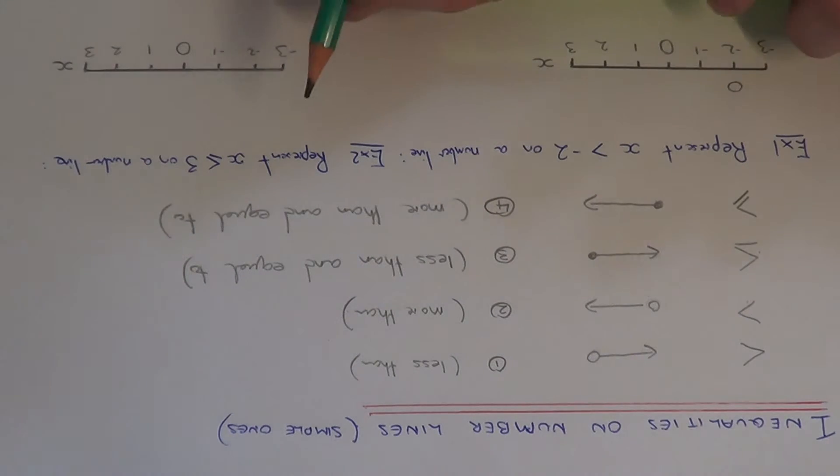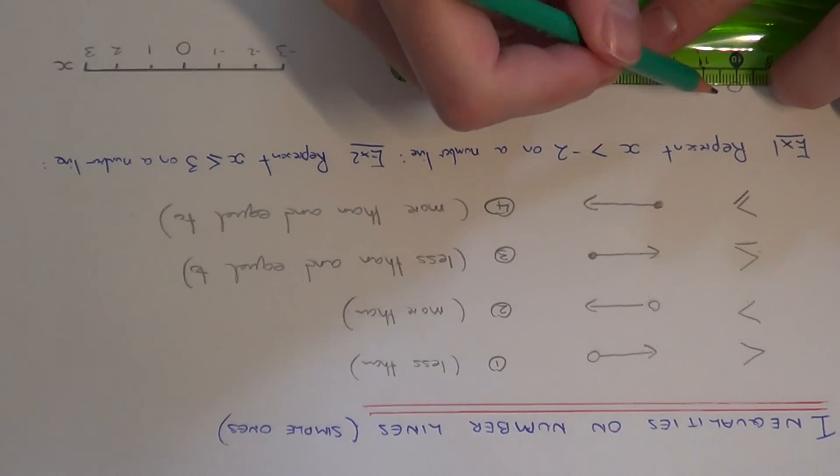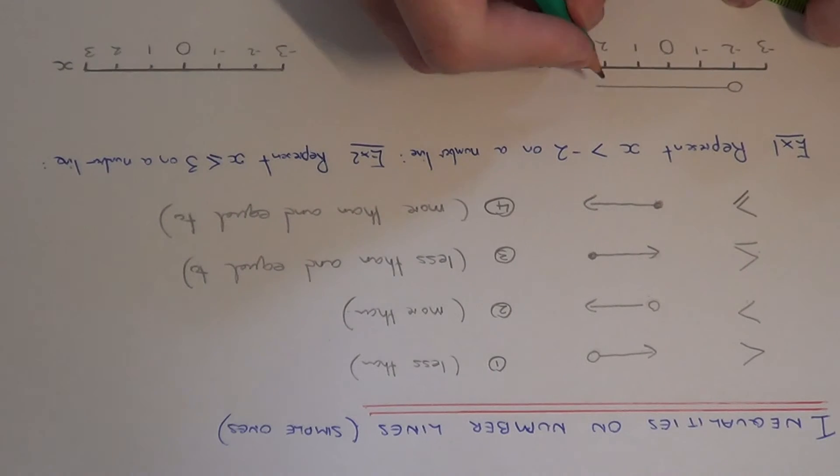And the arrow needs to point to the right because we need the numbers larger than minus two. So that's all you need to do.